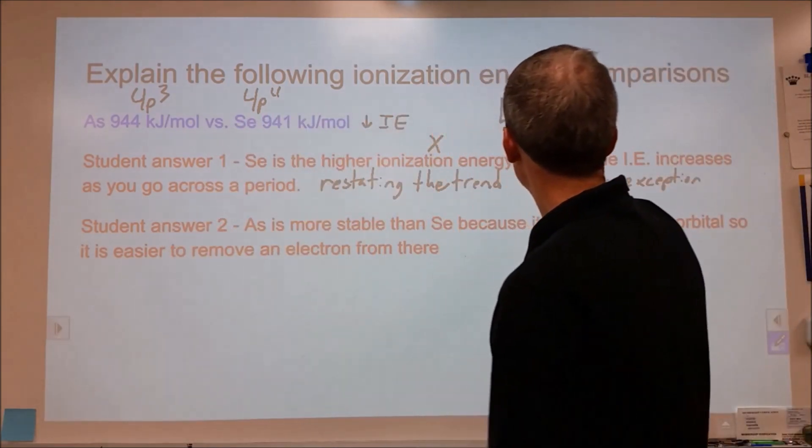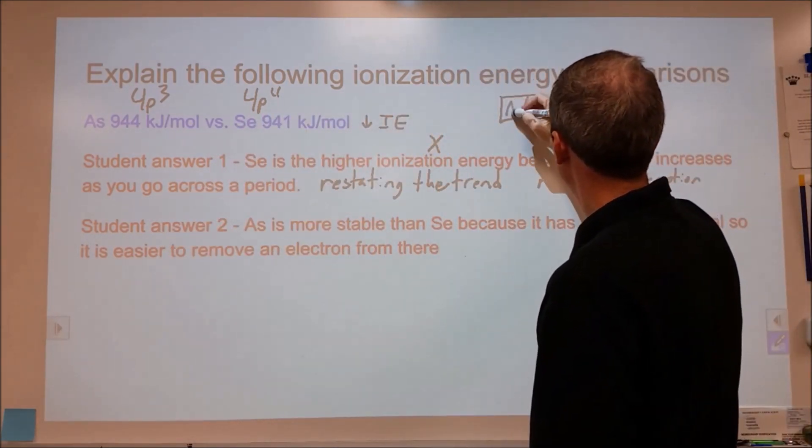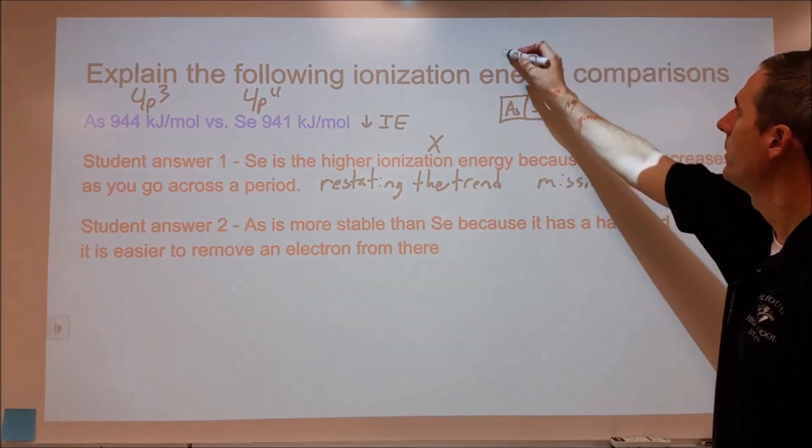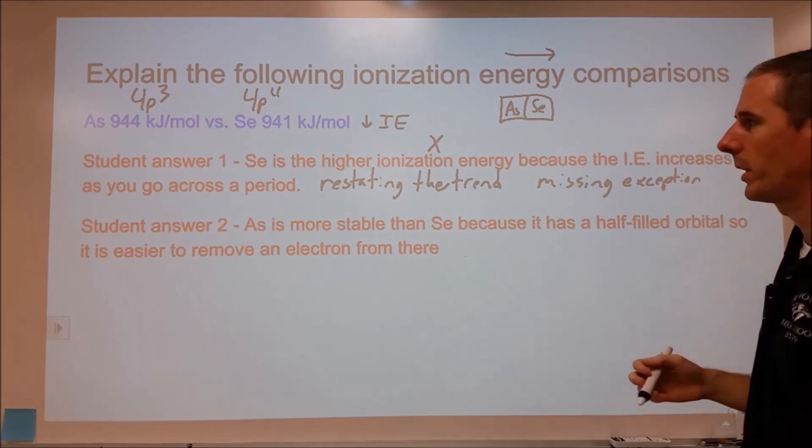This is not the case for these particulars. Arsenic is over here in the periodic table, and selenium is here, and yet selenium has lower ionization energy even though we're moving from left to right across the periodic table.